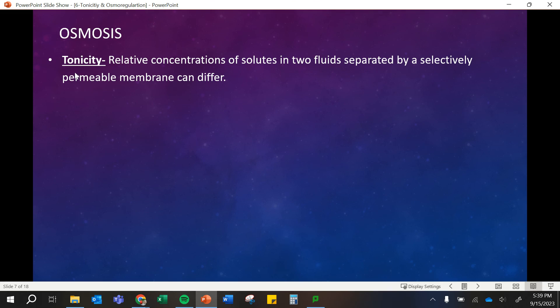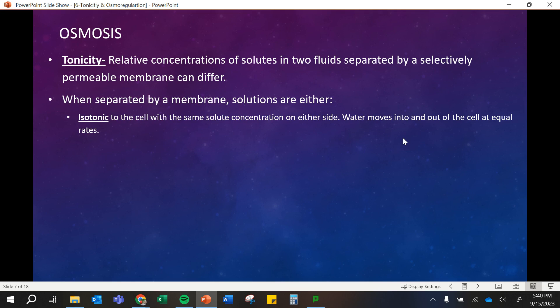This is our idea of tonicity. It's still our idea of osmosis, water moving through and crossing that selectively permeable membrane. So we have that membrane, we have different types of solutions. We can have isotonic where the cell, the inside and outside of the cell are the same concentrations.